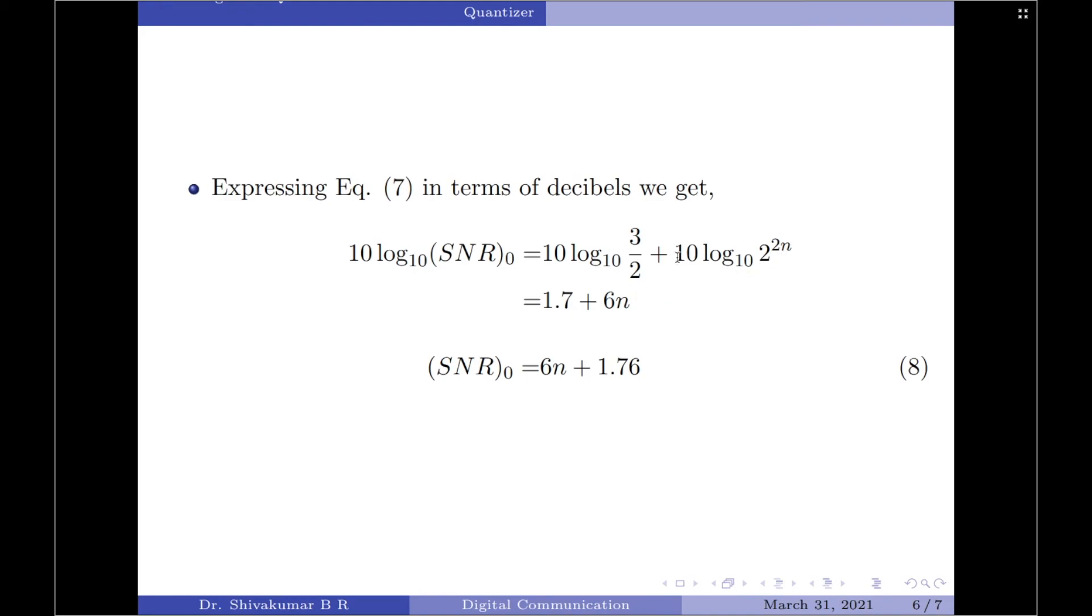When I take it here, it will be 20n. Then we have log₂ to the base 10, which is 0.3. So, this simplifies to 6n. So, the final expression for the output signal to noise ratio of a mid-riser quantizer is given by 6n plus 1.76.